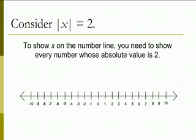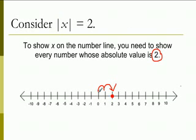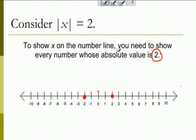When looking at a number line, if it says show that the absolute value of x equals two, we need to show every number whose absolute value is two. Positive two is two spaces from zero, and negative two is also two spaces from zero to the left. So on a number line, it looks like two closed dots — one at positive two and one at negative two — because the closed dot means the number must be exactly that value.